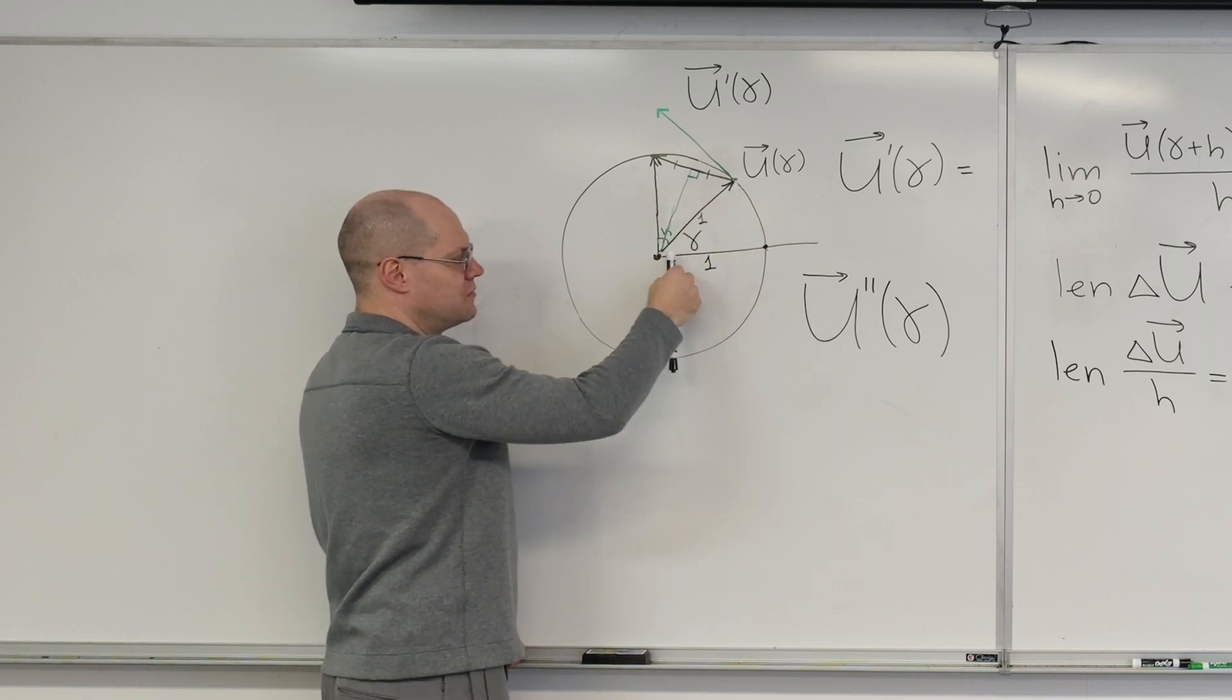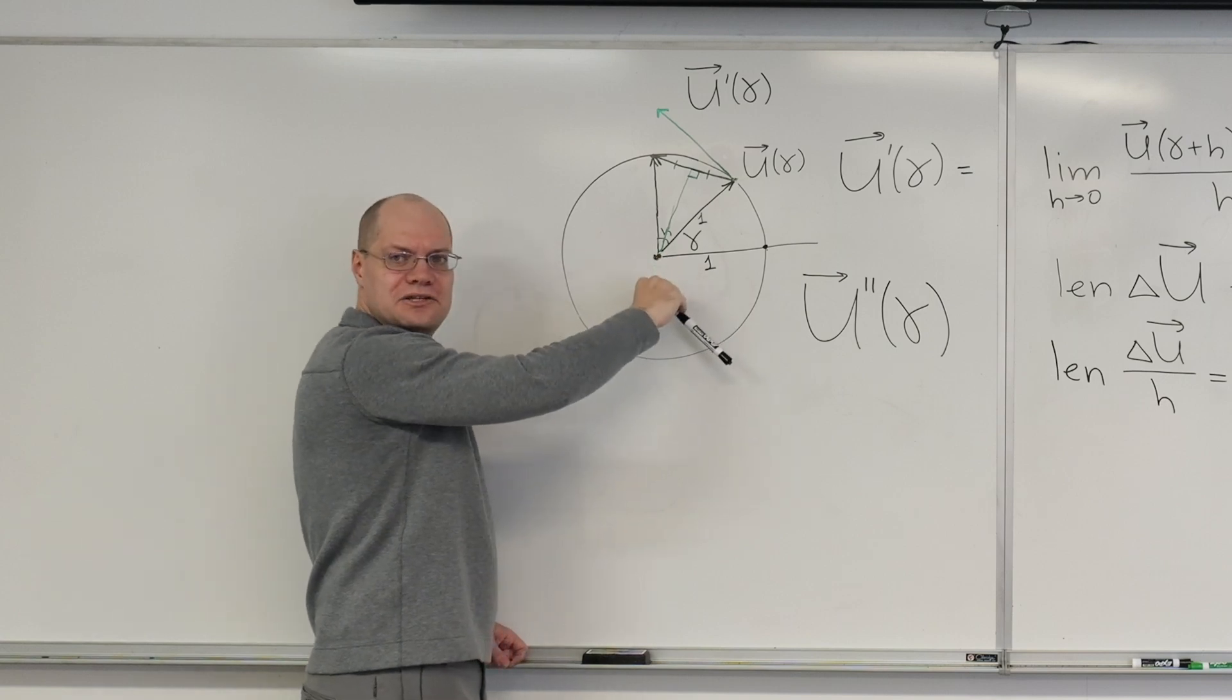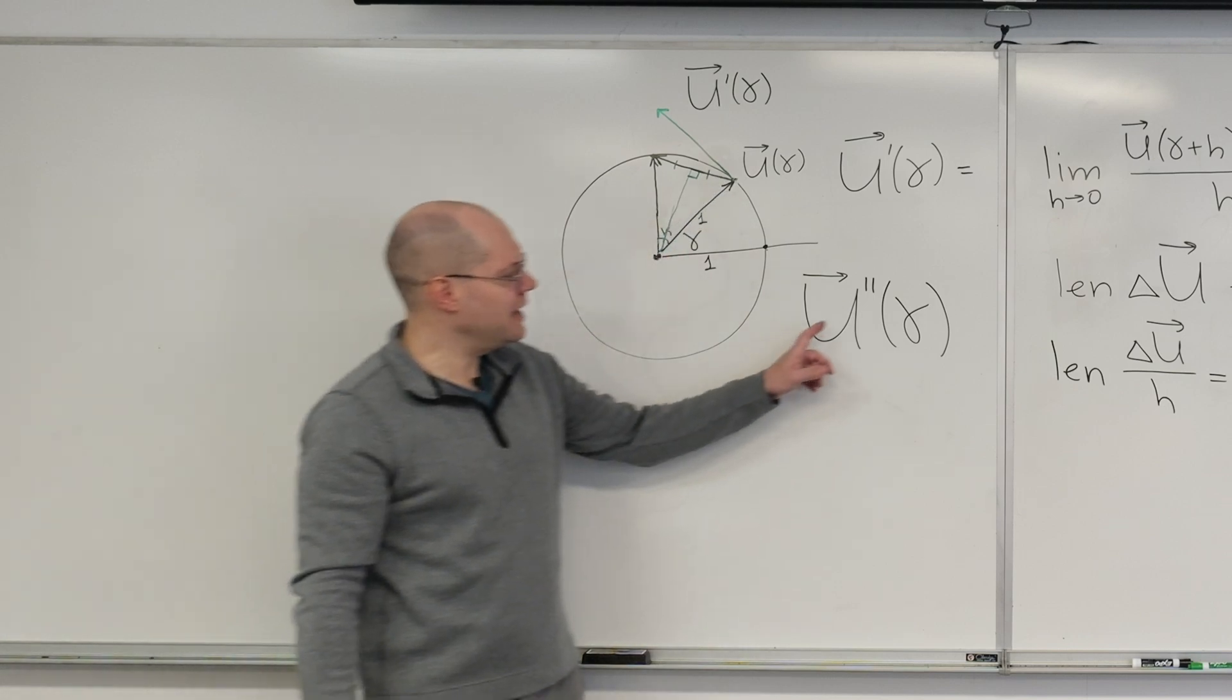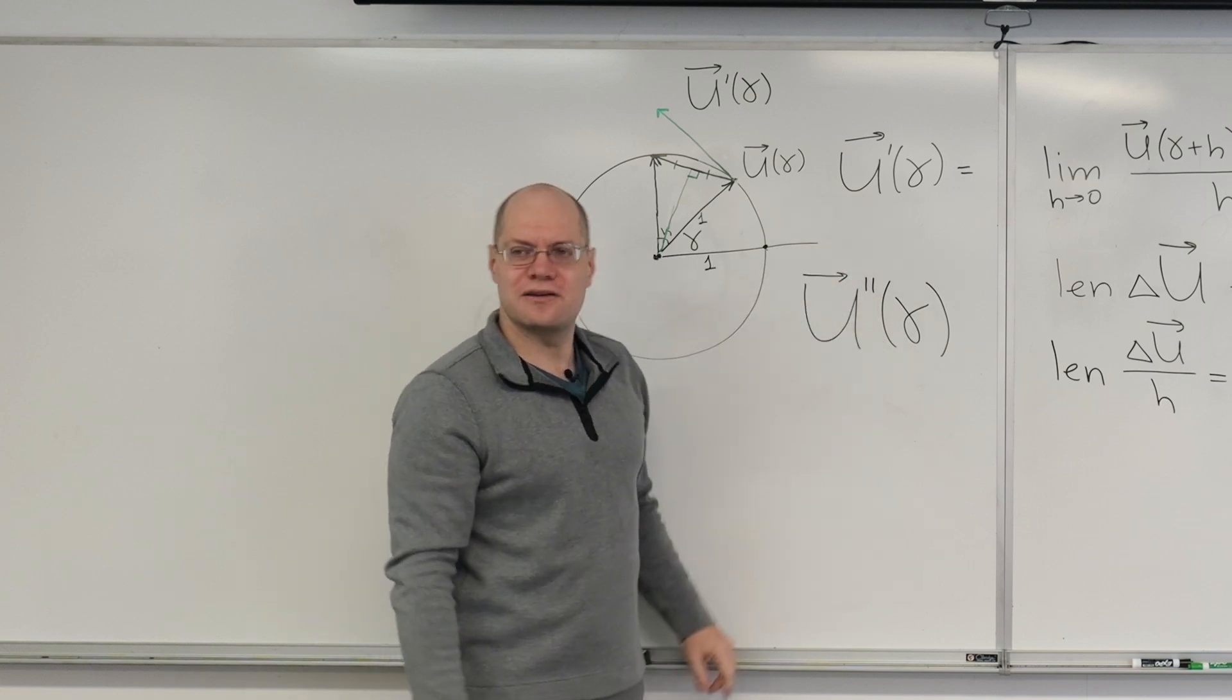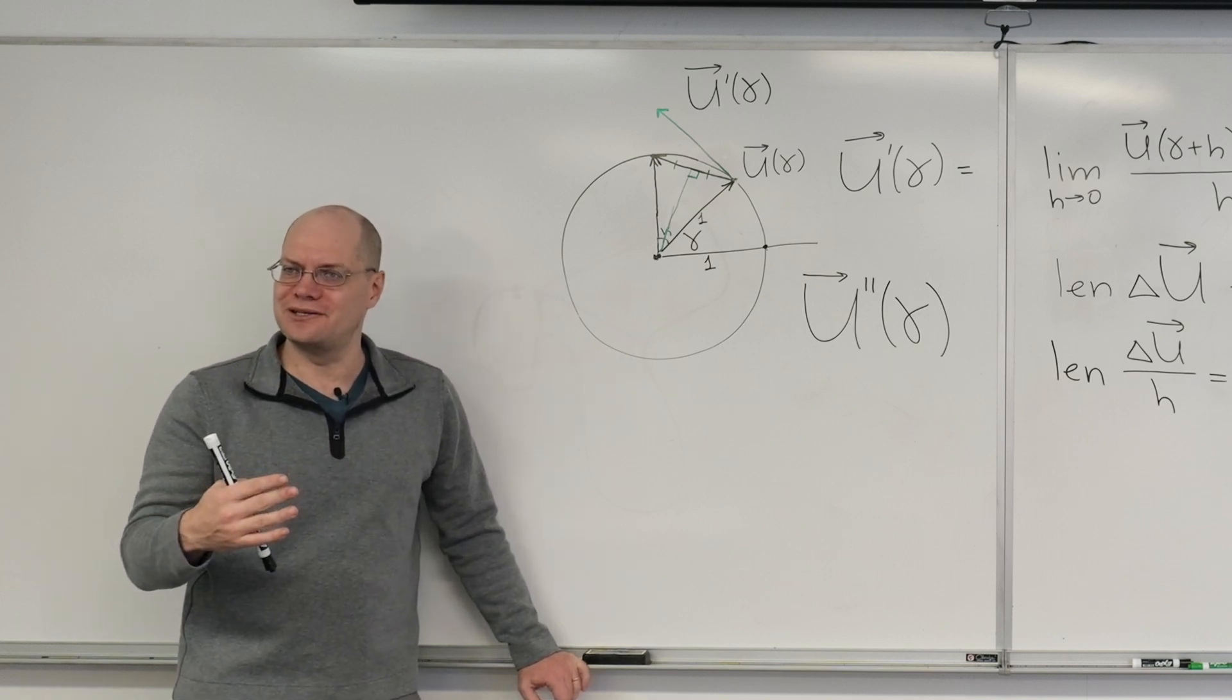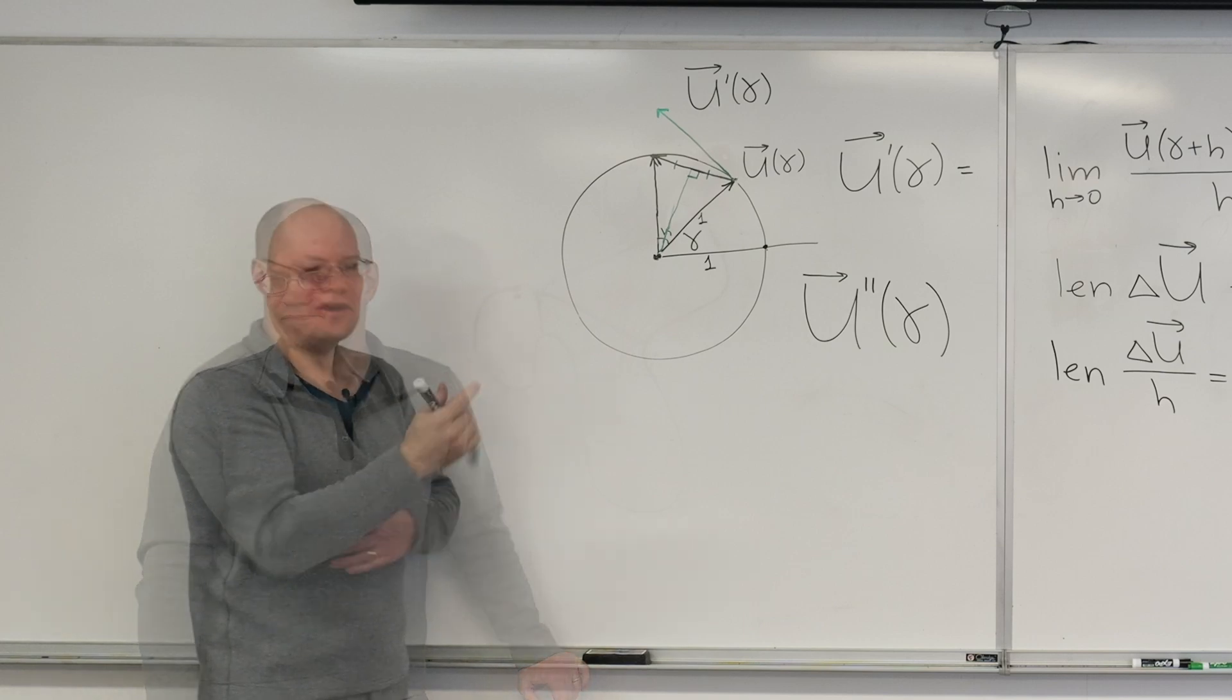And the third derivative will be turned by 90 degrees one more time. And the fourth derivative will be turned by 90 degrees one more time. So we now understand the derivatives of all orders for this particular U of gamma. So you see these U of gammas that can be analyzed from beginning to end are few and far between. And because we've found one, we're just going to milk it to death.